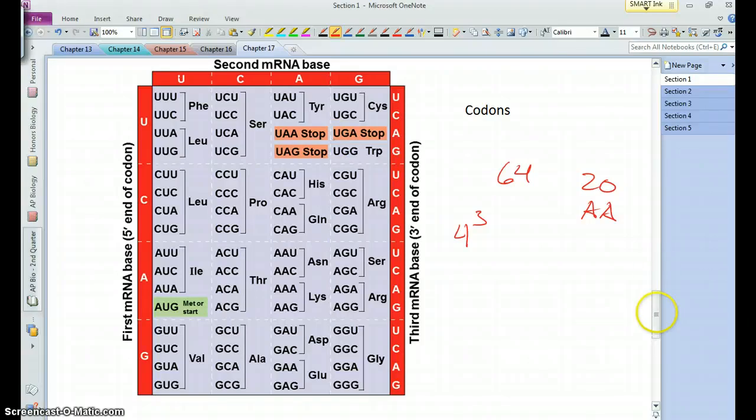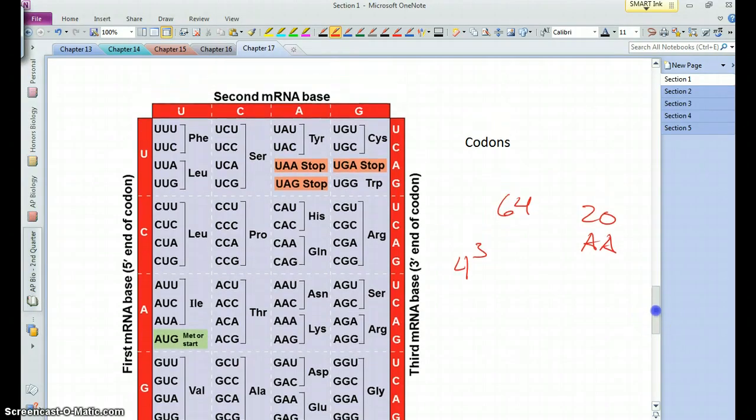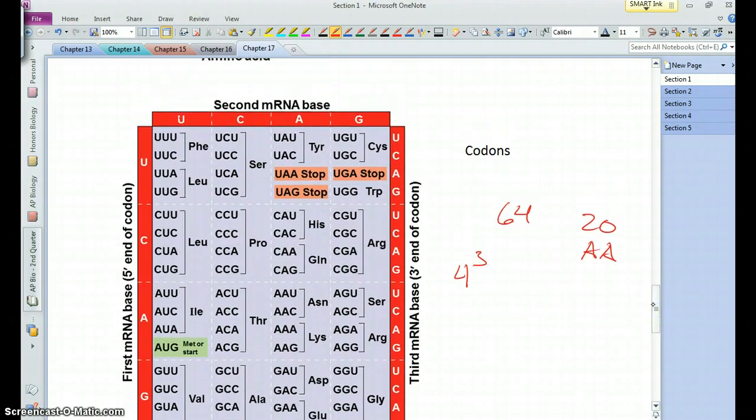So you'll notice that, for example, let's look at leucine. What really matters are the first two - if it's CU, it will be leucine. The third one doesn't matter. It's sometimes called the wobble in the third base. It can vary a little bit. And same with proline - as long as it's CC, it doesn't matter what the fourth one is. Threonine and AC, it doesn't matter what the fourth one is.